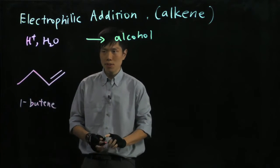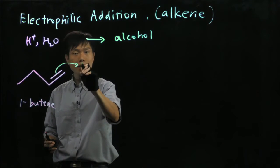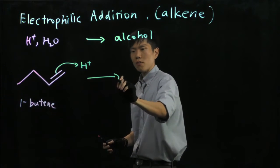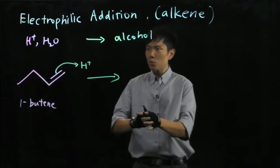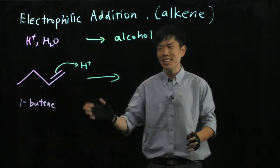And according to the mechanism, step 1 includes the pi bond picking up the H+. And then now we have a dilemma again. Should this H+ go to this terminal carbon or the other carbon? Again, we have to try.